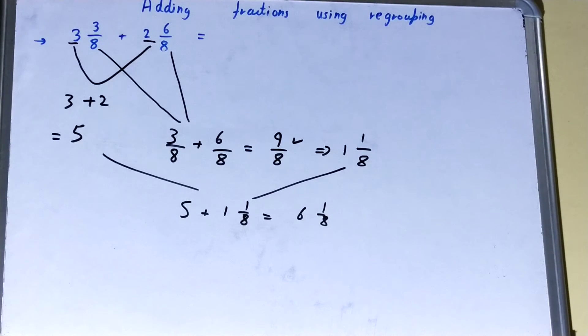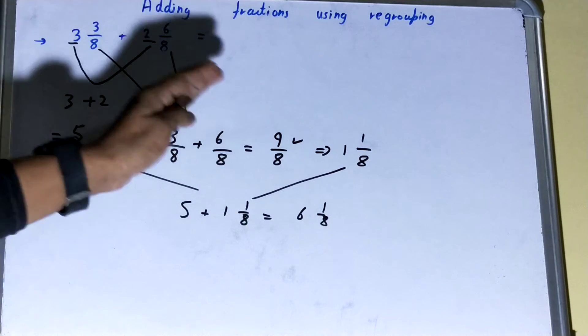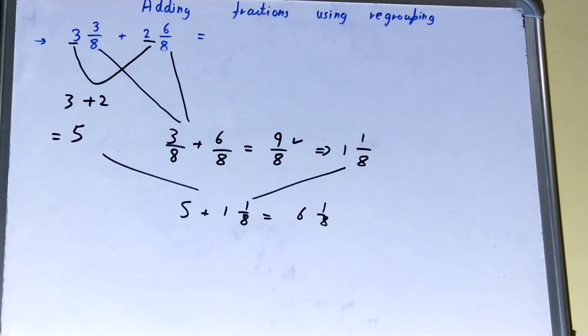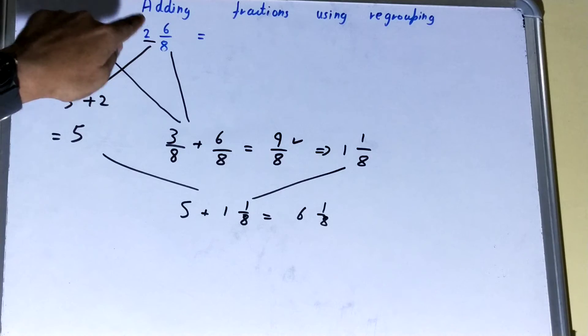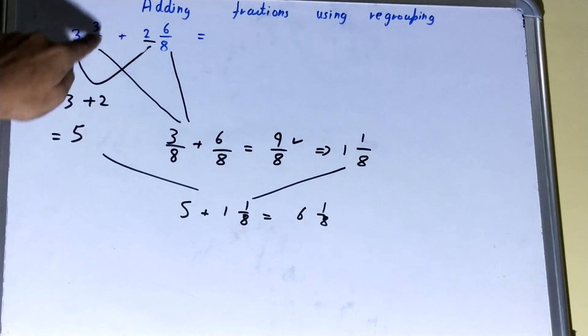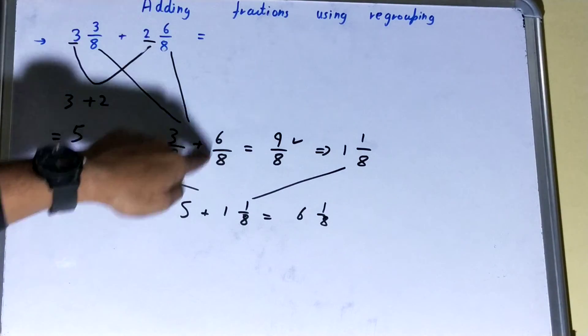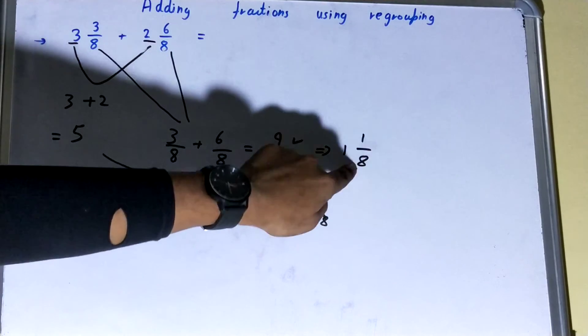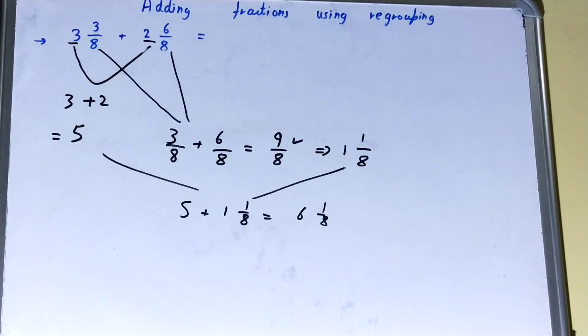This technique is very quick. The only thing you need to be careful of is the whole value will be added with the whole value and the fraction value will be added with the fraction value. Once you obtain the mixed fraction form, then you need to add it with the other value.